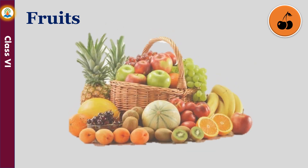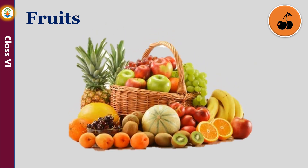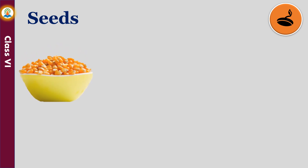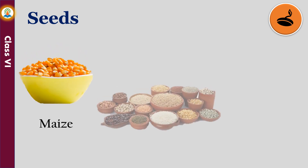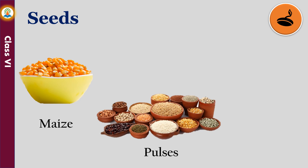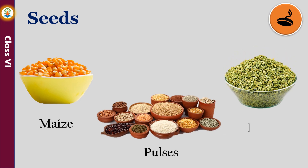Fruits are often sweet, juicy and fleshy. We eat fruits such as oranges, apples, banana and pineapple. The seeds of many plants are also eaten as food. Pulses that we eat are seeds of plants. Spices such as cumin seeds, fennel and coriander are also seeds.